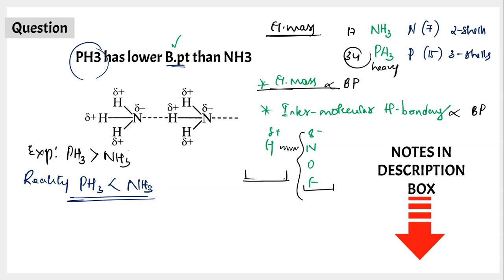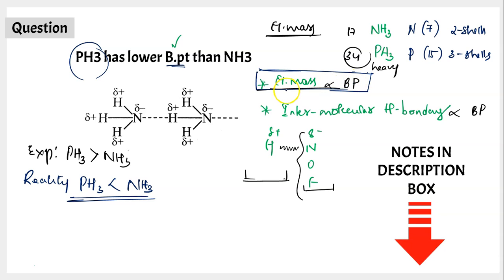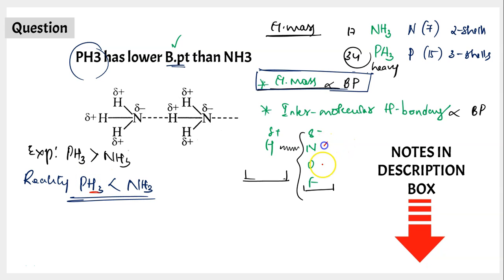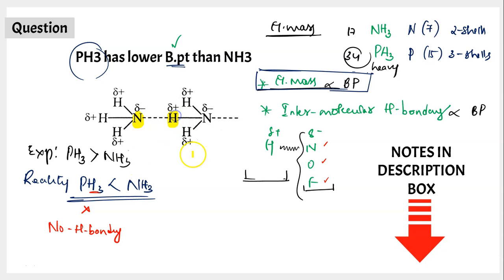Since molecular mass doesn't explain the boiling point here, we check for intermolecular hydrogen bonding. In PH3, although there is a delta-positive hydrogen, there is no delta-negative nitrogen, oxygen, or fluorine — so PH3 does not have intermolecular hydrogen bonding. In ammonia, nitrogen carries a delta-negative charge and hydrogen carries a delta-positive charge, so the nitrogen and hydrogen of adjacent molecules can interact with each other.